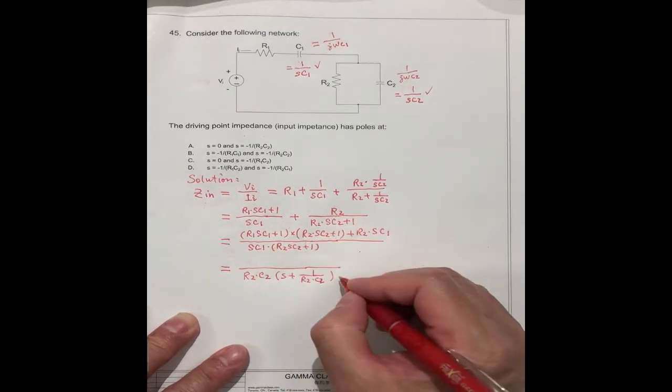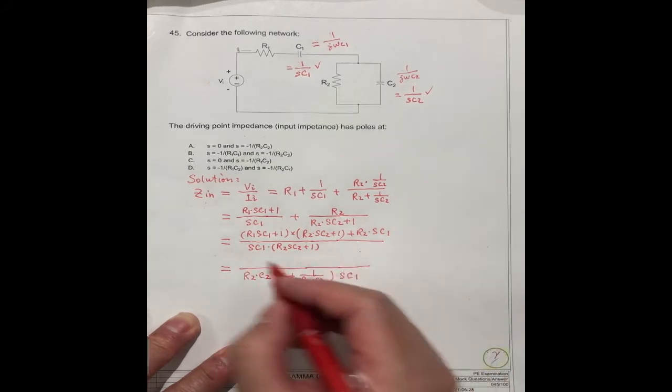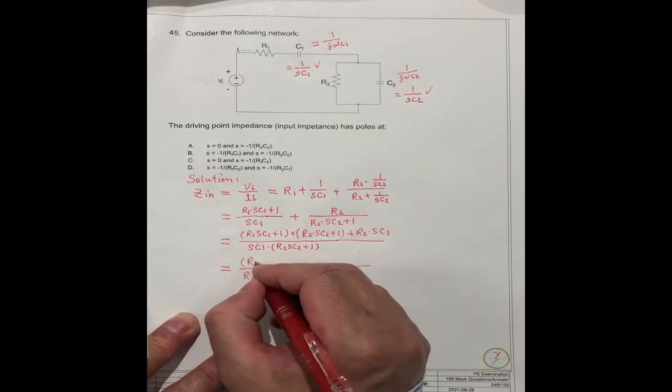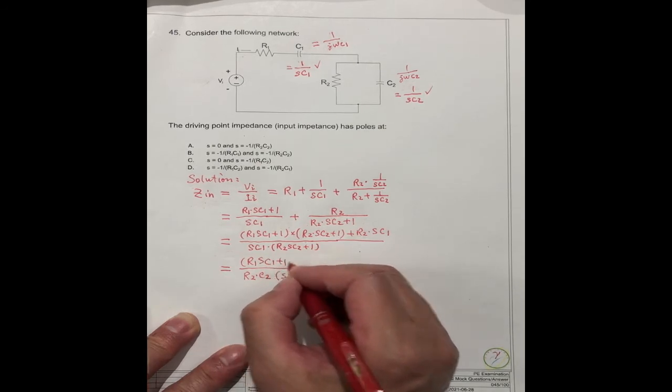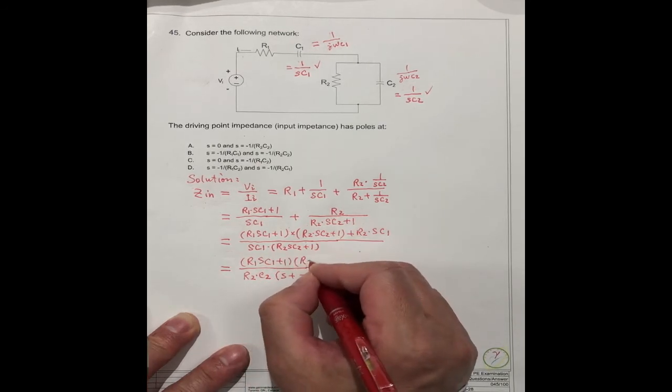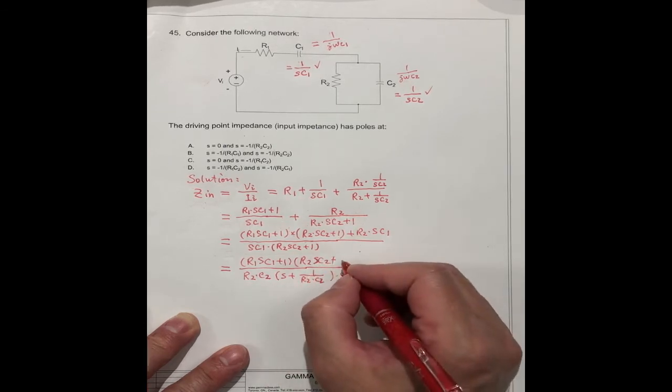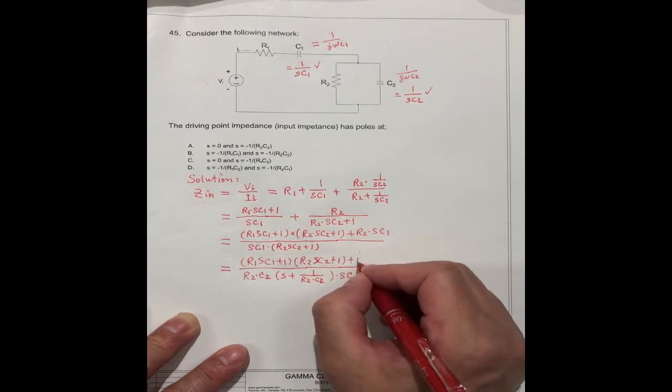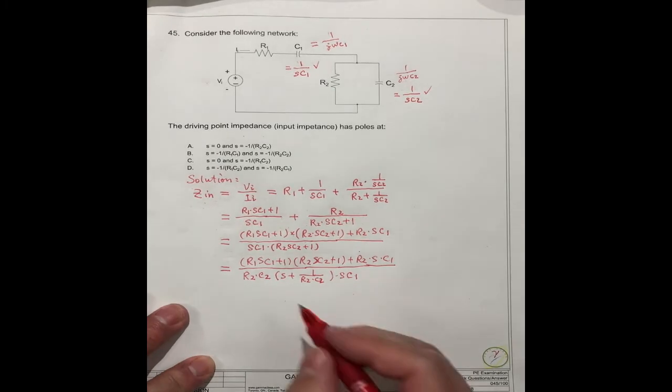Keep the S·C1 on top the same. We don't change anything. This one, (R1C1 + 1)(R2C2 + 1) + R2C1. So we can separate the S.